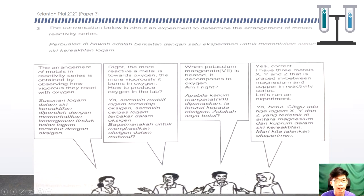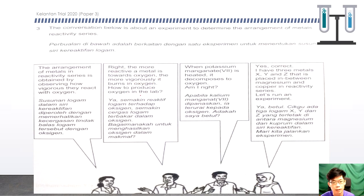The next question: the conversation below is about an experiment to determine the arrangement of metals in the reactivity series. There are four conversations. The arrangement of metals is obtained by observing how vigorously they react with oxygen. The more reactive a metal is towards oxygen, the more vigorously it burns. Oxygen is produced in the lab by heating potassium permanganate, which decomposes to release oxygen. There are three elements X, Y, Z that are placed between magnesium and copper in the reactivity series.